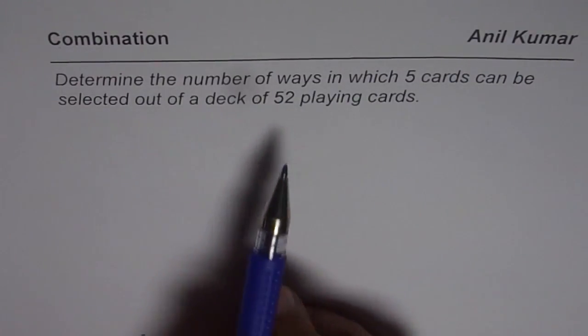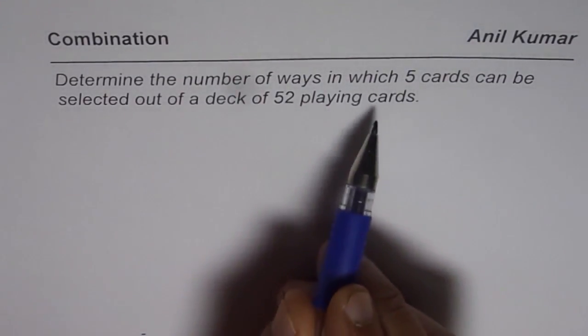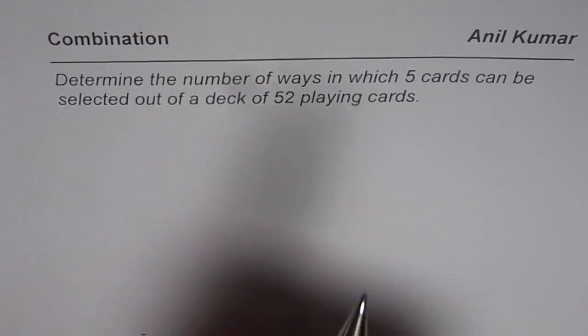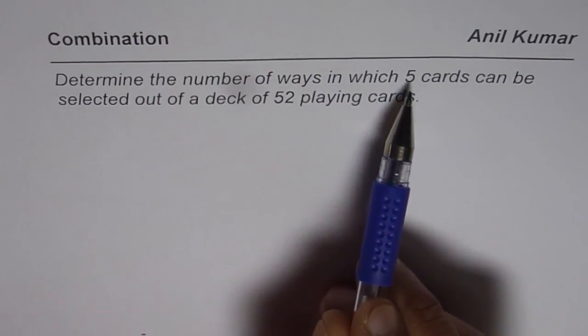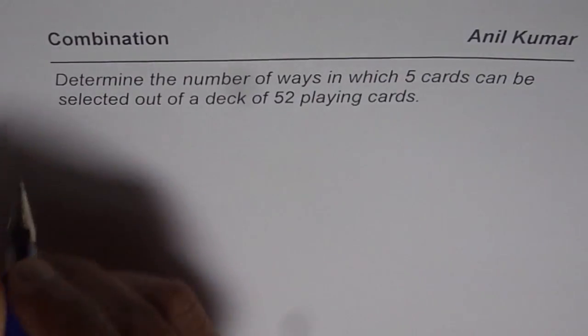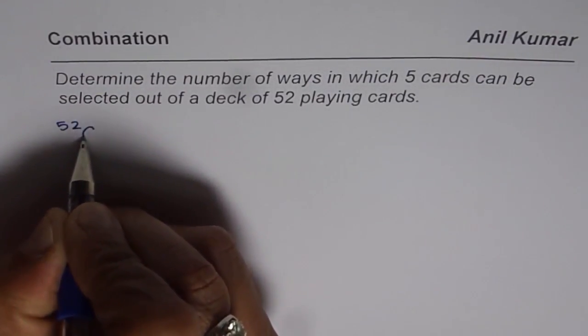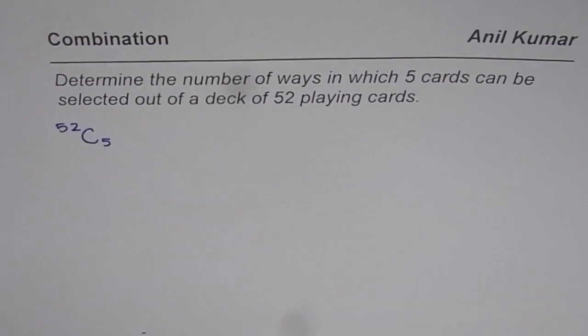So basically what are we trying to do? Out of 52 cards we are trying to select a group of 5 cards. That means a combination of 5 cards. So the answer is from 52 cards the combination of 5 cards is being selected. 52C5 is your answer.